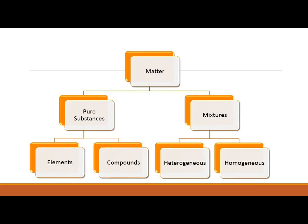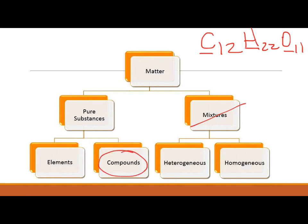Let's say I say sugar. Table sugar is C₁₂H₂₂O₁₁. First off, we know it's not a mixture — right off the bat, it can't be a mixture because it's just pure sugar. Now, it's either an element or a compound. It's got to be a compound because notice that it has carbon, hydrogen, and oxygen — three different elements chemically combined and hooked together. So that must be a compound.